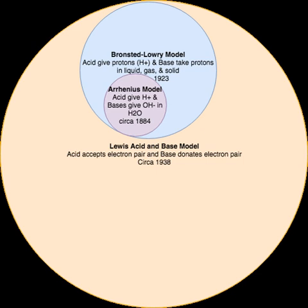In 1838, Justus von Liebig proposed that an acid is a hydrogen-containing substance in which the hydrogen could be replaced by a metal. This redefinition was based on his extensive work on the chemical composition of organic acids, finishing the doctrinal shift from oxygen-based acids to hydrogen-based acids started by Davy. Liebig's definition, while completely empirical, remained in use for almost 50 years until the adoption of the Arrhenius definition.